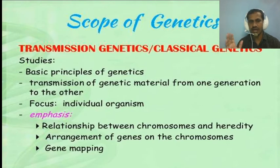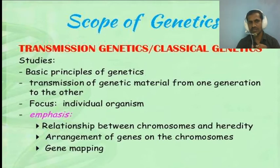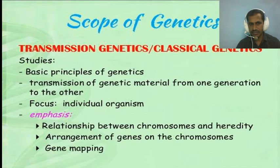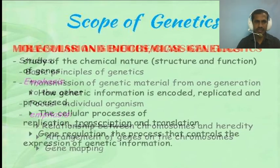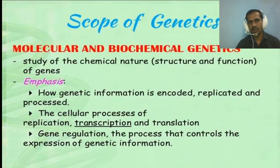Transmission genetics is focused on individual organisms. It emphasizes the relationship between chromosomes and hereditary, the arrangement of genes on chromosomes, and gene mapping. It is mainly concerned with how genetic material transfers from one generation to another, focusing on individual organisms.